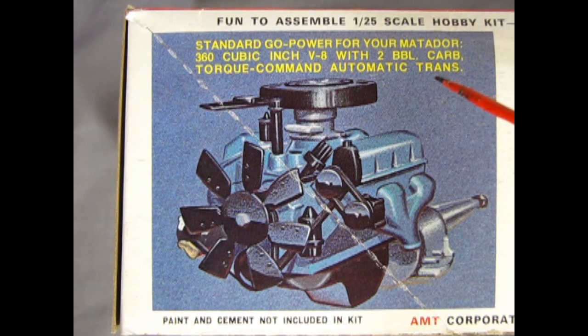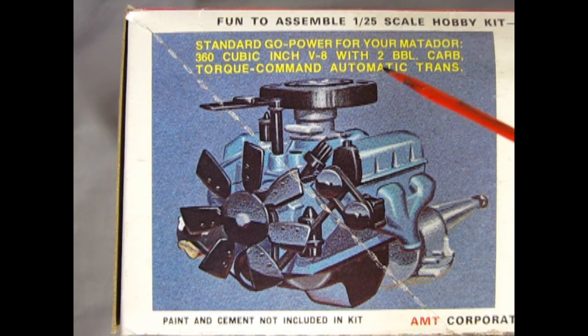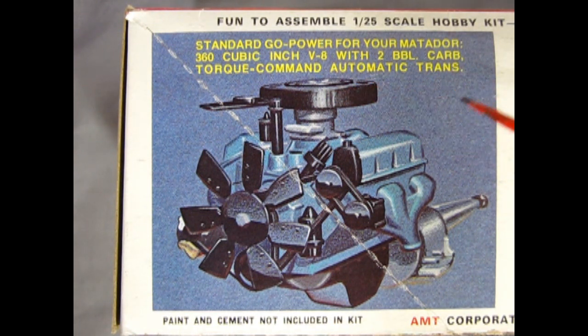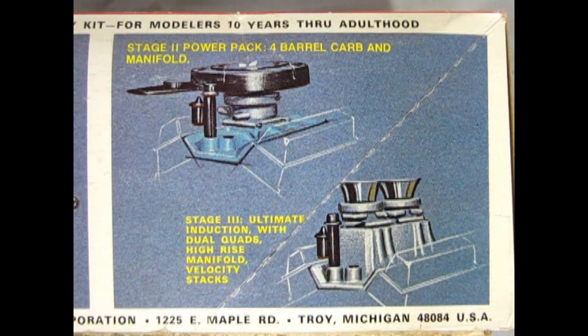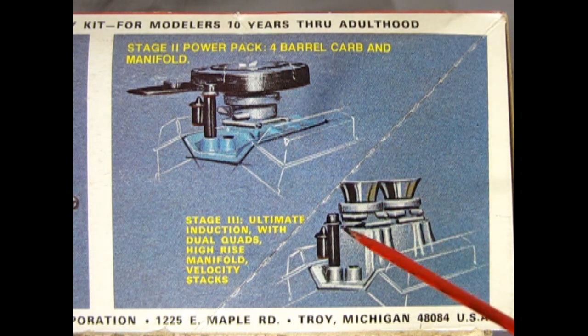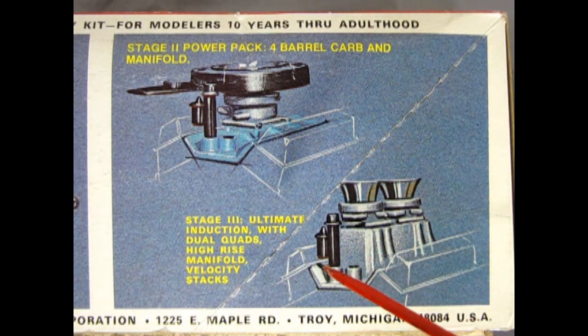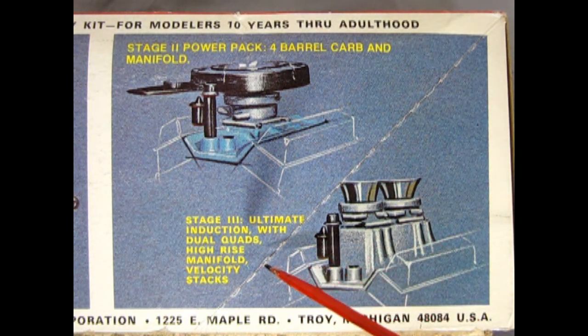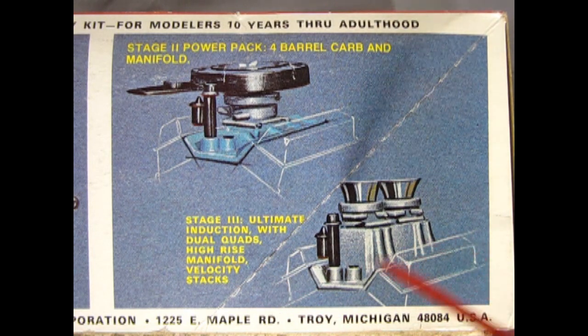And here you can see it's got the standard go power for your Matador 360 cubic inch V8 with two barrel carbs torque command automatic transmission. You can also build this model as a stage two power pack with a four barrel carburetor and manifold or as the stage three which is the ultimate induction with dual quads high rise manifold velocity stacks.